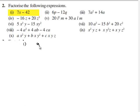The given expression is 7x minus 42. Let us find out the factors of each term individually.